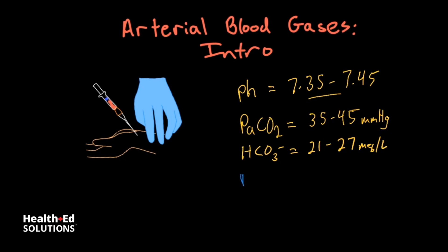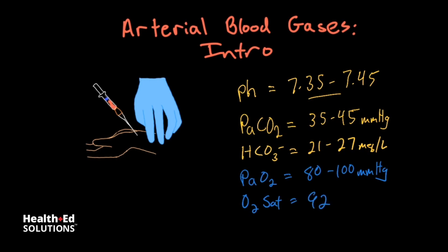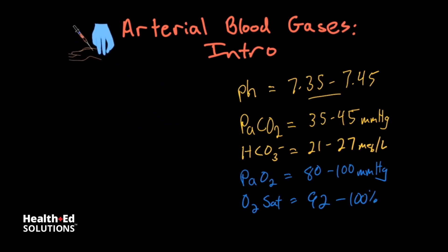Then we have the partial pressure of oxygen, or PaO2, with normal values of 80 to 100 millimeters of mercury. And we have oxygen saturation with a normal value of greater than 92%, or 92 to 100%.